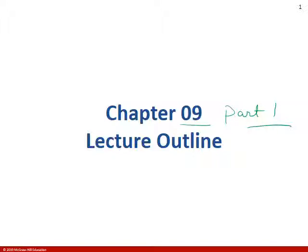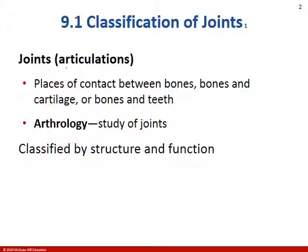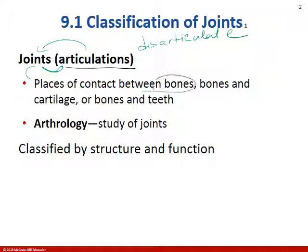Welcome to chapter 9 part 1. We're going to talk about different articulations or joints. Here we have the definition of joints or articulation — you can use these words interchangeably. Remember in the skeleton if they weren't joined together we called it disarticulate. Joints are where two bones meet, or bone and cartilage like in the case of the ribcage, and bones and teeth. Teeth are not bones — we'll get to that in just a moment.